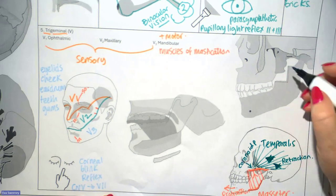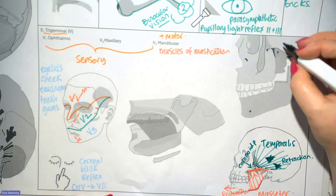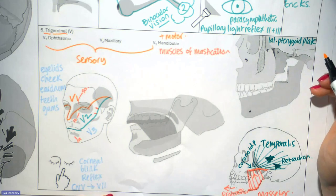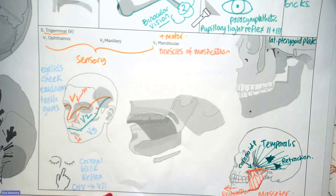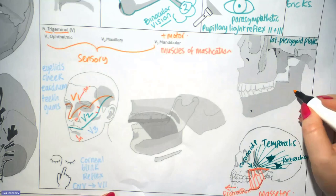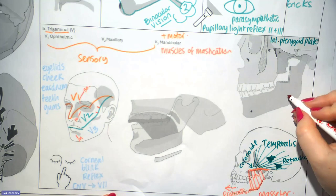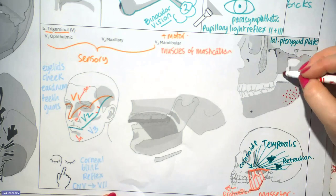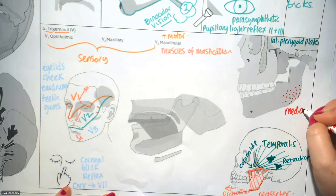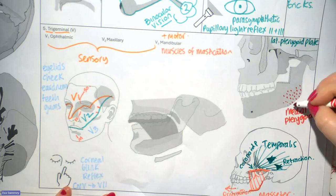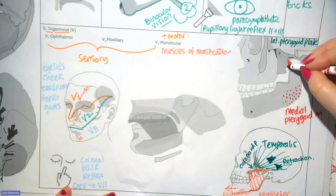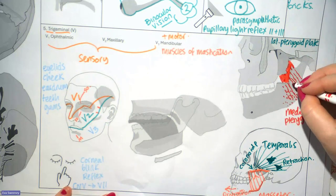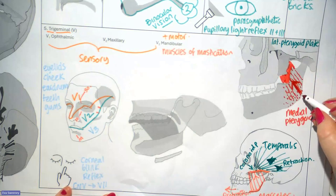Next are the two pterygoid muscles, attaching to the lateral pterygoid plate. The medial pterygoid is similar to the masseter in that it attaches to the angle of the mandible, but on the inside. It runs up to the medial side of the pterygoid plate. The direction of its fibres means it helps to close the mouth and also assists with protrusion. It also attaches to the maxillary tuberosity, just beside the upper wisdom teeth.